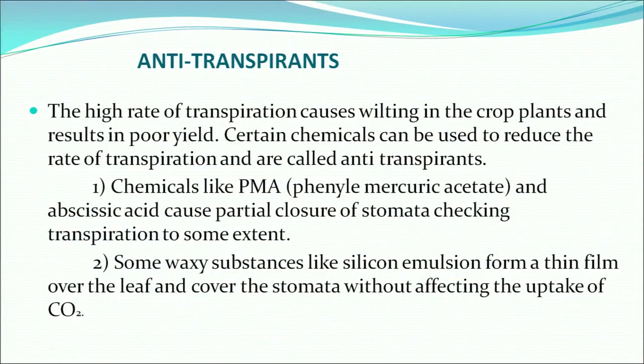A high rate of transpiration causes wilting in crop plants and results in poor yield, which is not desirable. Certain chemicals can be used to reduce the rate of transpiration — these are called antitranspirants. Antitranspirants are required because we cannot always check how much transpiration is happening and how much water is available to the plant root hairs.